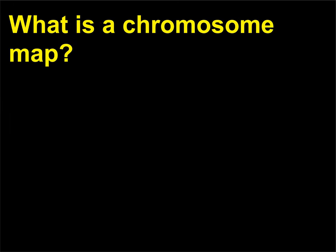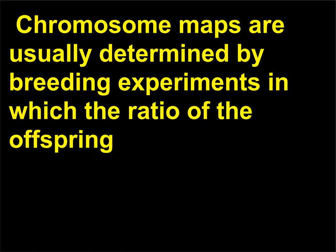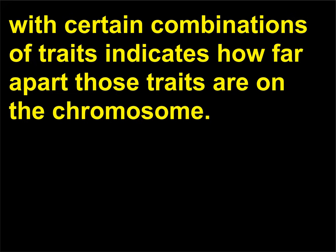What is a chromosome map? A chromosome map lists the sequence of genes found on a given chromosome. Chromosome maps are usually determined by breeding experiments in which the ratio of the offspring with certain combinations of traits indicates how far apart those traits are on the chromosome.